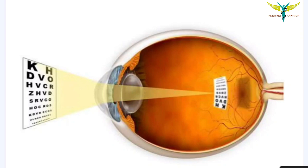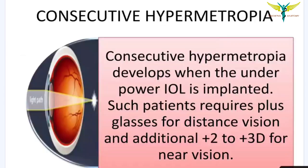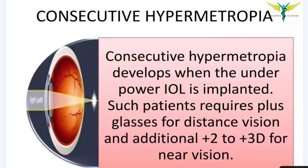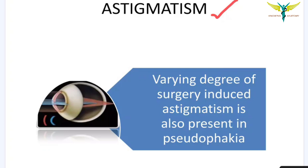Consecutive hypermetropia develops when an under-power IOL is implanted. Such patients require plus glasses for distance vision and an additional plus 2 to plus 3 diopters for near vision. In this condition, the light focal point is formed behind the sensory retina. Varying degrees of surgically induced astigmatism are also seen in cases of pseudophakia.